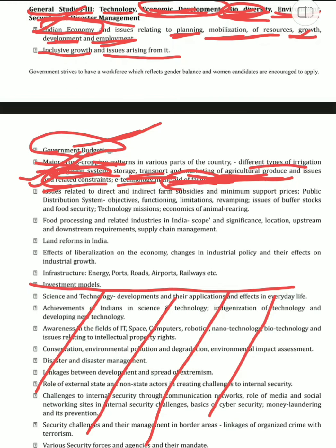We have issues related to direct and indirect farm subsidies — that is a separate topic. Minimum support prices is a separate topic too. It's not just about knowing what minimum support prices are — you have to know everything: what are its challenges, how are they implemented, when were they implemented, what was the initial status, what is currently going on, and what are the issues arising from it.